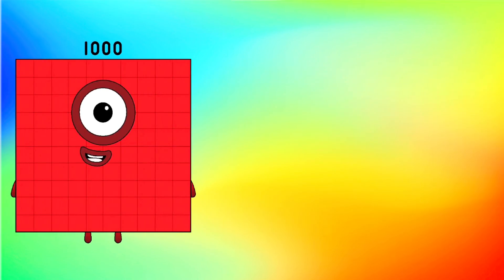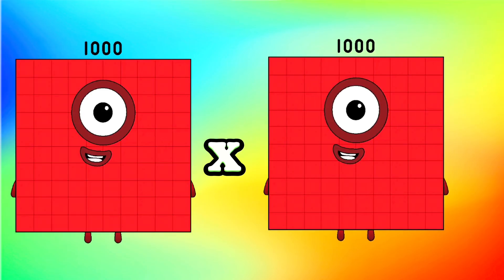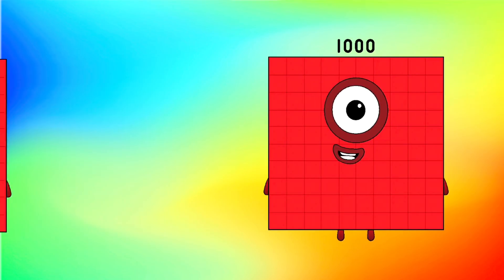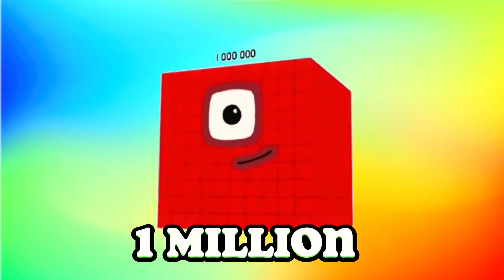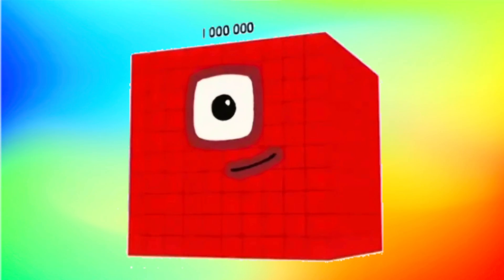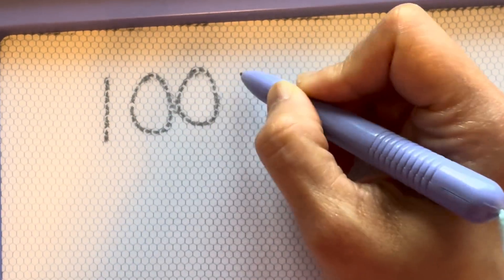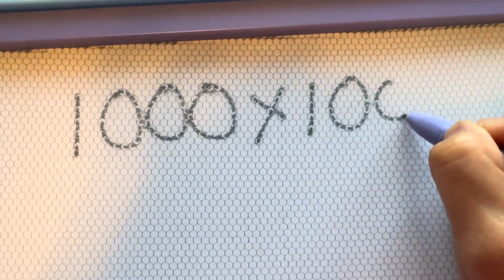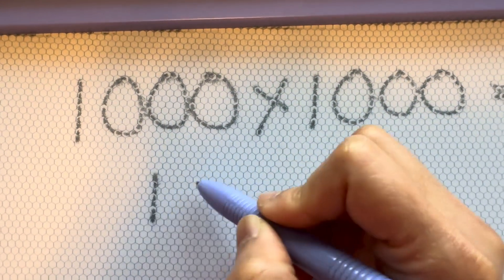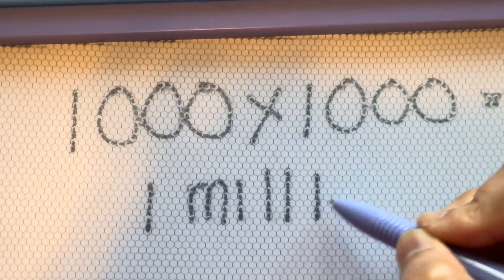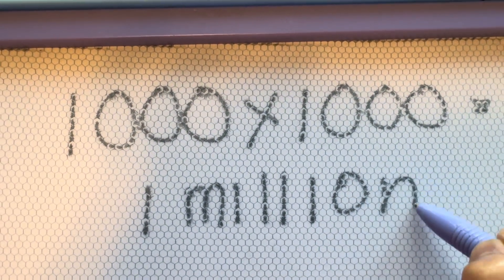1,000 multiplied by 1,000 is equals to 1,000,000. 1,000 multiplied by 1,000 is equals to 1,000,000.